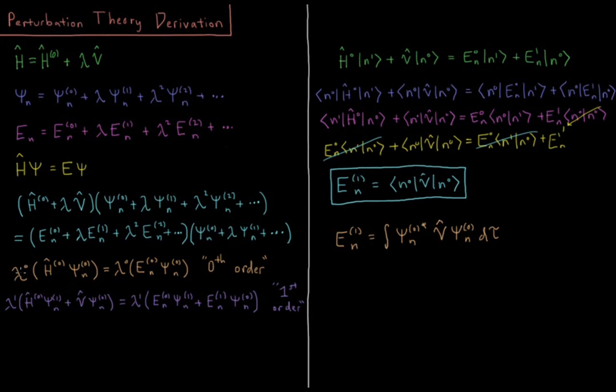So first we have the 0 order, everything that has lambda to the 0. We get lambda to the 0 times H0 psi0 equals lambda to the 0 times E0 psi0. So that's not interesting, that's just the reference Schrodinger equation. That's the Schrodinger equation for our reference Hamiltonian, reference wave function, and reference energies. So 0th order perturbation theory is just the reference Schrodinger equation.